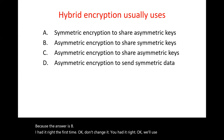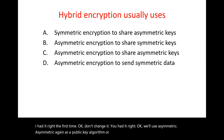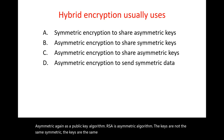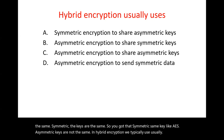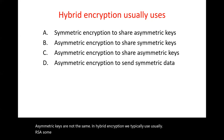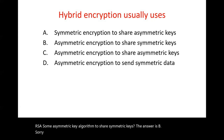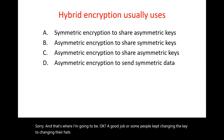In hybrid encryption we use asymmetric encryption — a public key algorithm like RSA — to share symmetric keys like AES. Asymmetric means the keys are not the same; symmetric means they are the same. RSA is asymmetric; AES is symmetric. In hybrid, we use an asymmetric key algorithm to share symmetric keys. The answer is B.